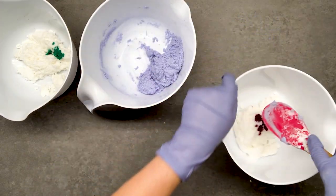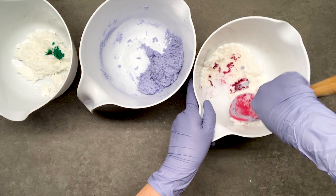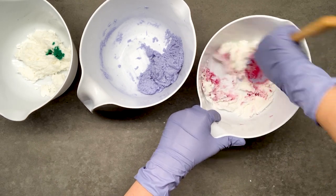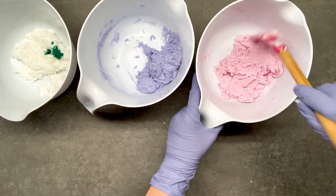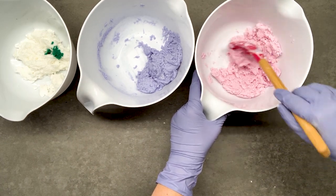The coloring that I'm using today is a liquid soap colorant and that's because I wanted a more pastel look. If you wanted more bold colors you can use micas and that will give it a deeper pigment.